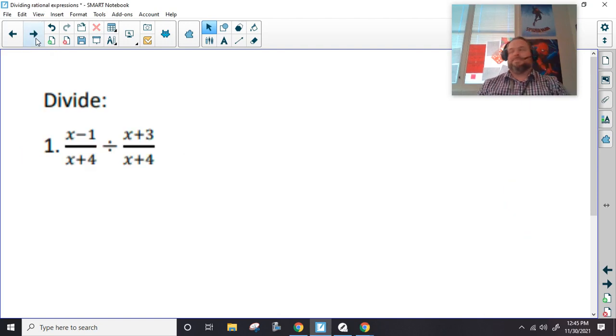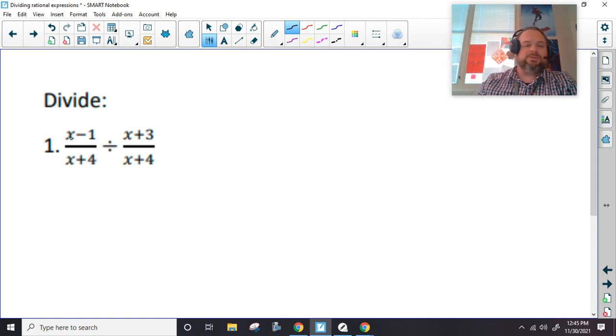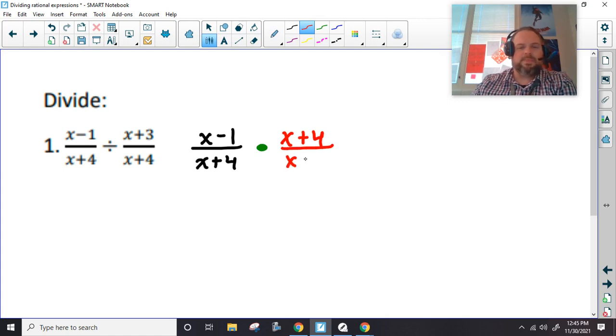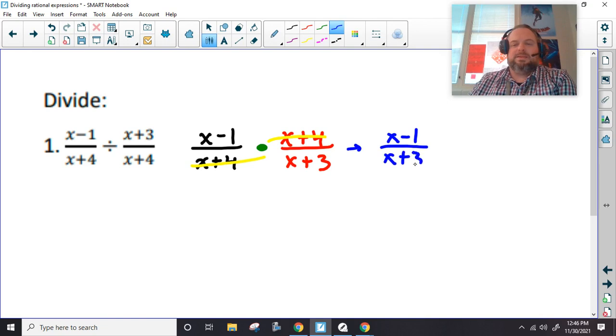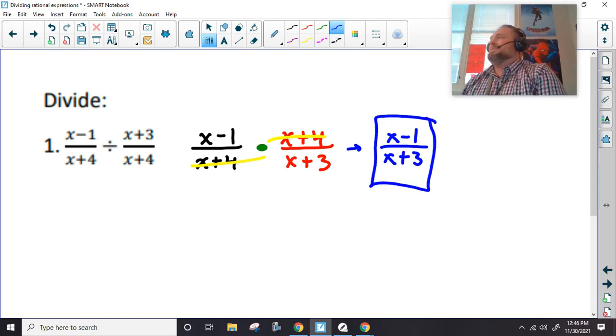Here's our first example. We are going to divide, so we're going to keep the first one the same: (x-1)/(x+4). We're going to change this division sign to multiplication. Just like we took the cowboy and flipped them upside down, we're going to flip this and it's the reciprocal. Remember we can only cancel vertically or diagonally, so we're going to cancel out the (x+4) pew pew, and we are done. We just multiply what's left.